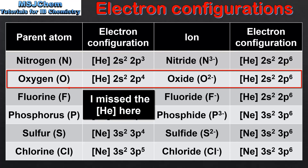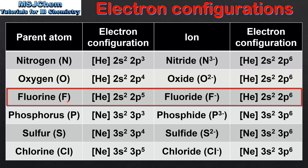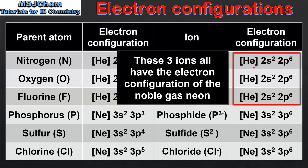Next is Oxygen which has the electron configuration 2s2, 2p4. The oxygen atom can gain 2 electrons to form the oxide ion which has a 2- charge. The 2 electrons go into the 2p sublevel which gives it the same electron configuration as the nitride ion. Next is Fluorine which has the electron configuration He2s2, 2p5. A fluorine atom can gain 1 electron to form the fluoride ion which has a 1- charge. The electron goes into the 2p sublevel.